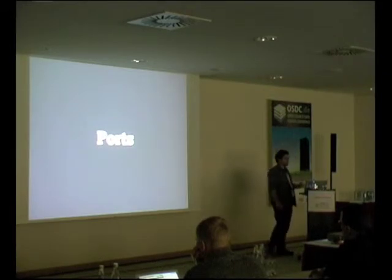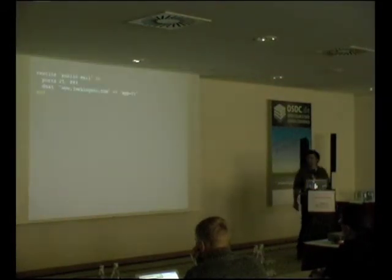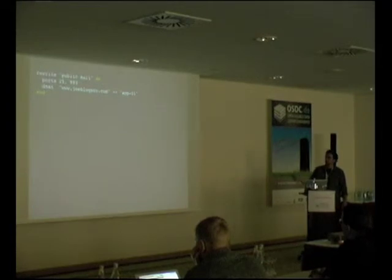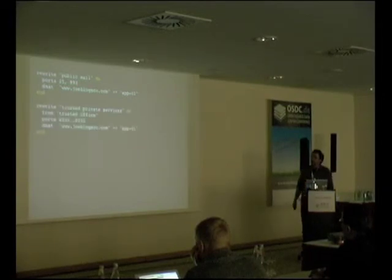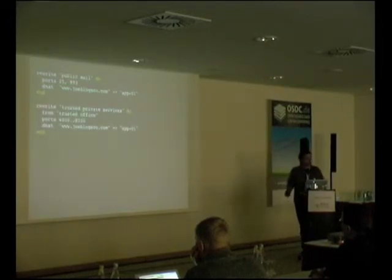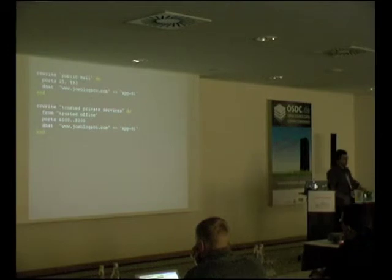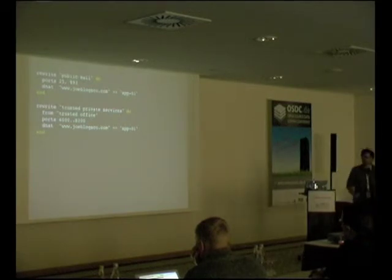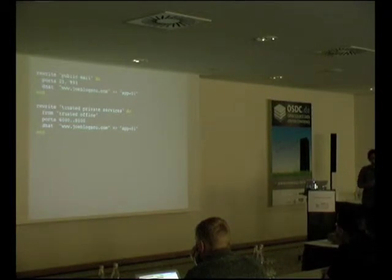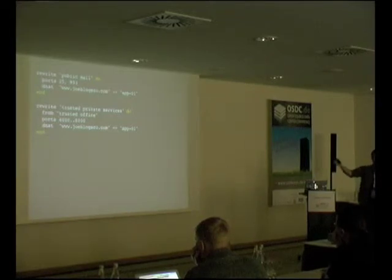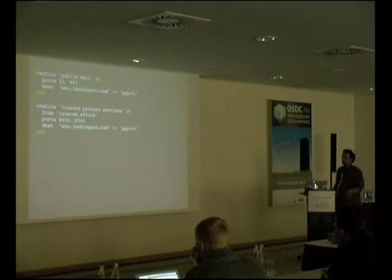There are a bunch of shortcuts for doing things with ports. You can pass multiple ports like 25 and 993 into a single rewrite block. You can also do port ranges — say port 6000 to port 8000 — and RIPT will do the smart thing, converting it into the IP tables range command rather than creating 2,000 individual rules.